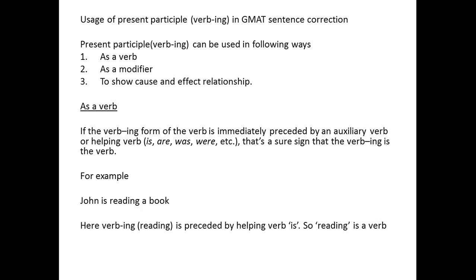Now, remember, present participle or verb-ing has different usages in grammar. In GMAT, there are three usages that are commonly tested. First, as a verb. Second, as a modifier. And third, to show a cause and effect relationship. So let's see how to identify when it is used as a verb and when it is a modifier.